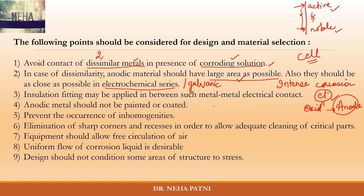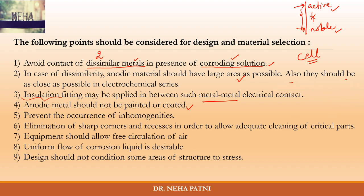While designing, make sure there is no metal-to-metal electrical contact; if it exists, use insulation fittings. Also, the anodic metal should not be painted or coated. If you paint or coat it and then a crevice or crack develops in the coating, the exposed anodic metal will corrode heavily. This will be explained in more detail in a coming video.